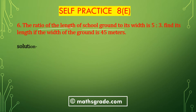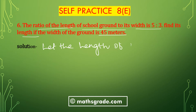We will solve question number 6: The ratio of the length of the school ground to its width is 5:3. Find its length if the width of the ground is 45 metres. It is given that the ratio of length to width is 5:3.